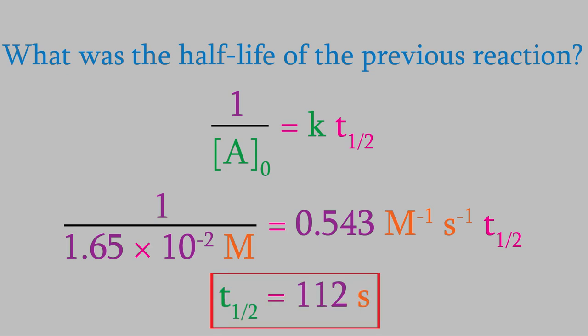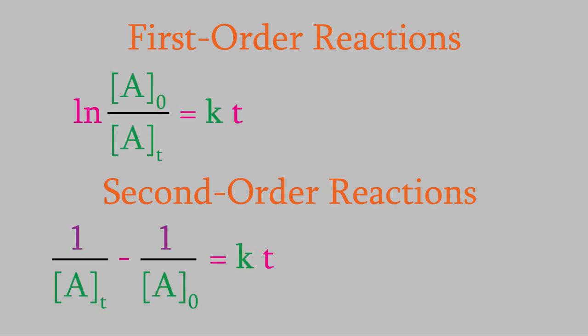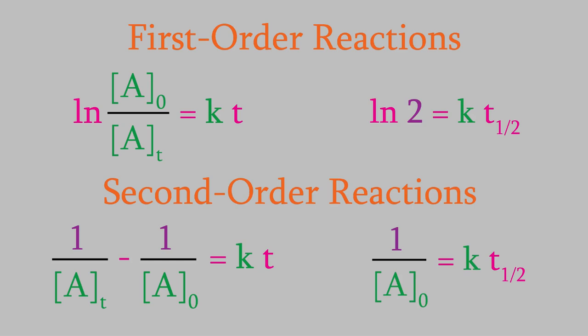Now let's take a second and review what we know so far. We've looked at both first- and second-order reactions, and for each of them we got an equation that ties the reactant concentrations to the time of the reaction. We also got equations for the half-life of each type of reaction. We also found out that we could find the rate constant for a first-order reaction by drawing a graph. It turns out we can also use a graph to find the rate constant of a second-order reaction.